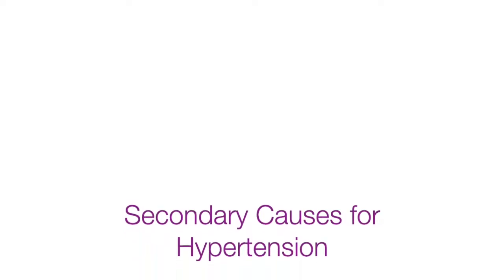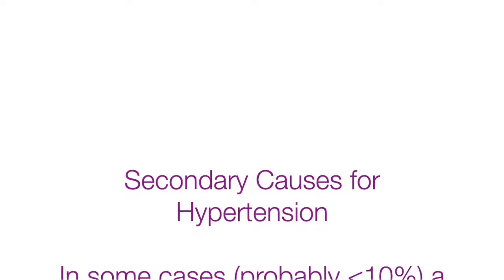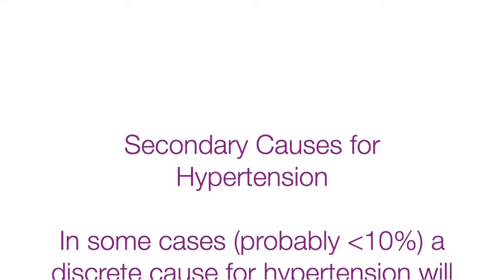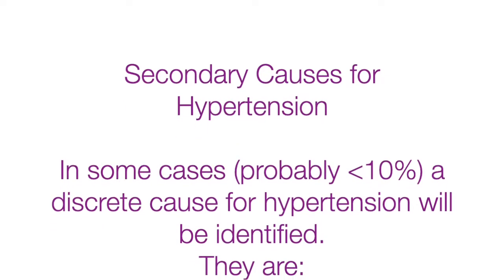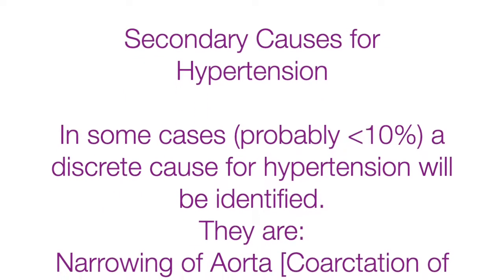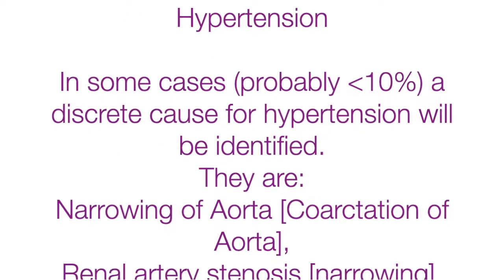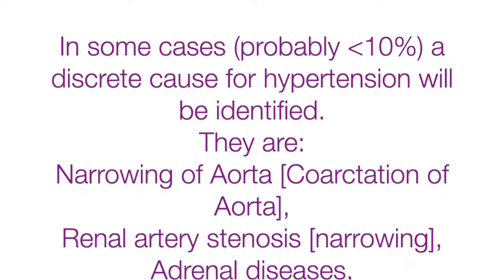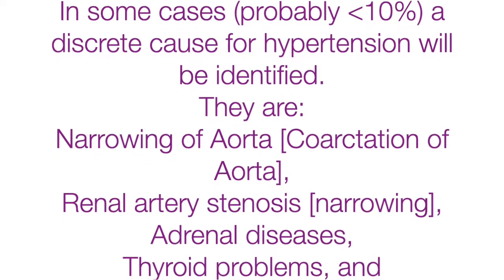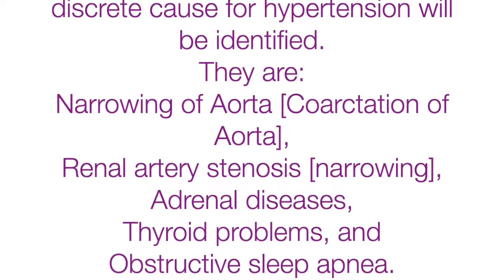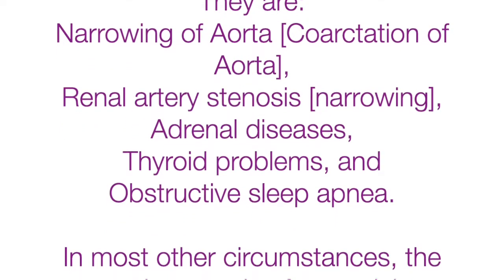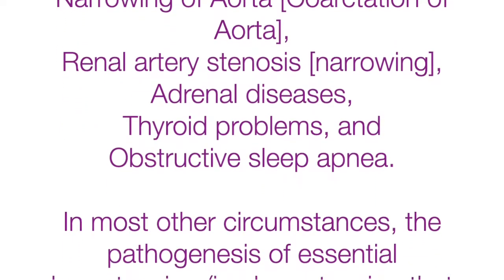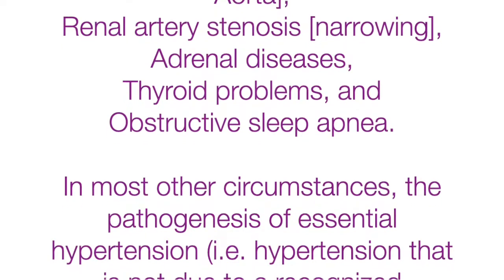Secondary Causes of Hypertension: In some cases, probably less than 10% of hypertension cases, a discrete cause will be identified. These include narrowing of the aorta (technically called coarctation of the aorta), renal artery stenosis (that is narrowing), adrenal diseases, thyroid problems, and obstructive sleep apnea.